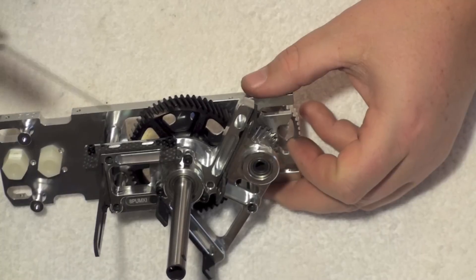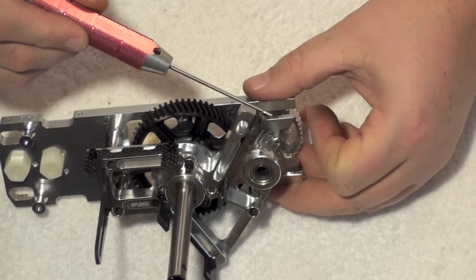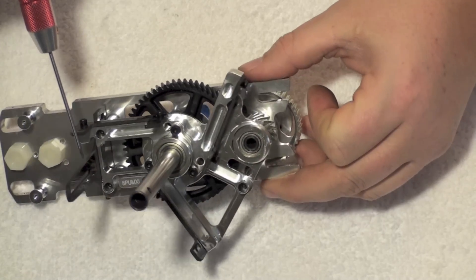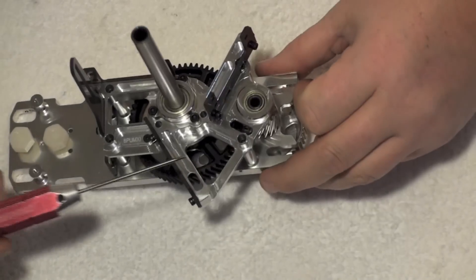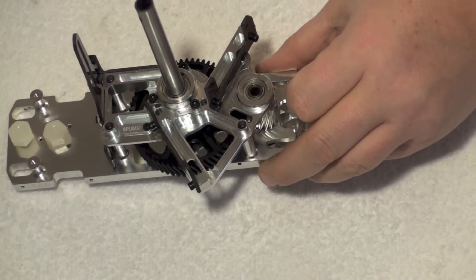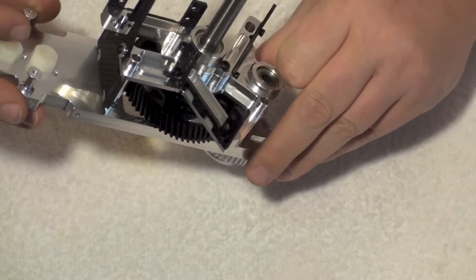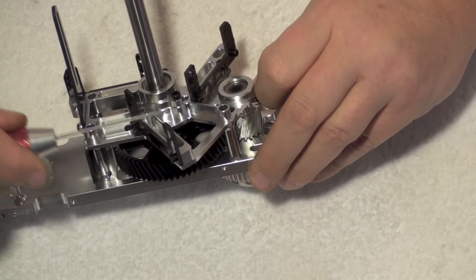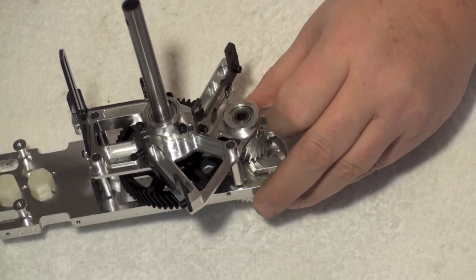Special note, it talks about in the manual making sure this chamfered edge is to the outside on all these servo plates. The reason for that is so when our canopy goes on, that doesn't rub against the canopy. It's chamfered to clear the edge of the canopy.